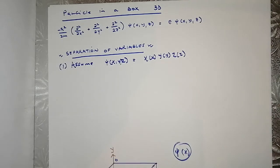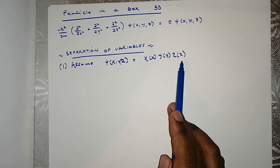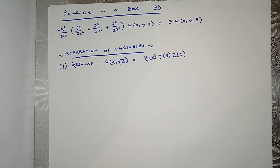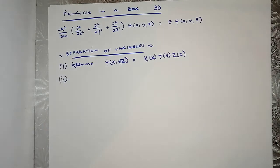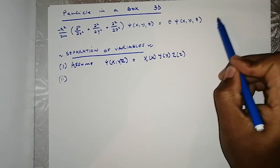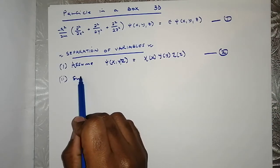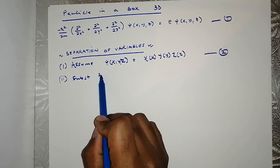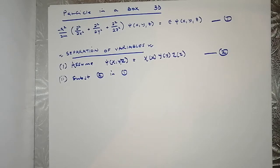We assume that our wave function can be expressed as a product of three functions — one in terms of x, one in terms of y, and one in terms of z. That is the first condition for separation of variables. Secondly, we're going to do substitutions. Let's call this equation 1 and the wave function equation 2. We're going to substitute equation 2, which is the wave function, into equation 1 — the Schrödinger equation.